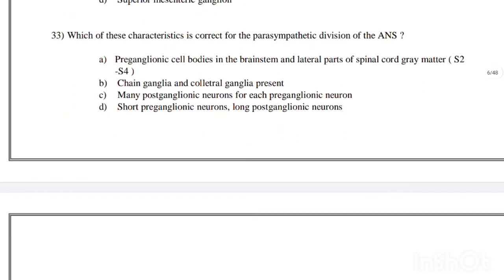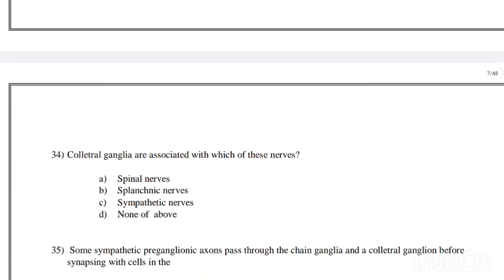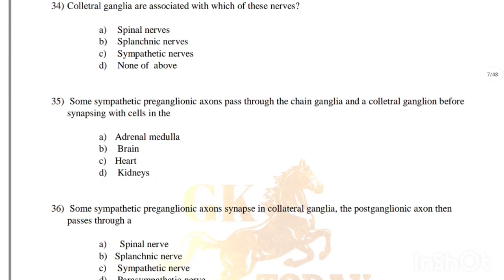Which of these characteristics is correct for the parasympathetic division of the ANS? Pre-ganglionic cell bodies are in the brain stem and lateral parts of the spinal cord gray matter S2–S4. Collateral ganglia are associated with the splanchnic nerve. Correct answer is option B, splanchnic nerves.